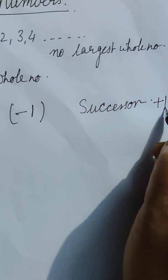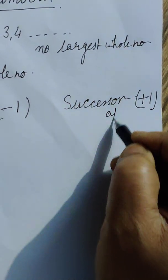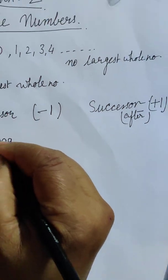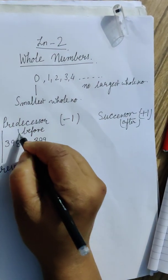this means a number after the number. After the given number. And predecessor is before the given number.